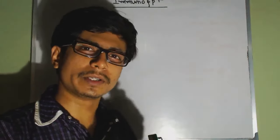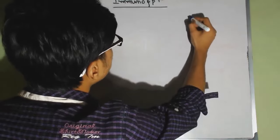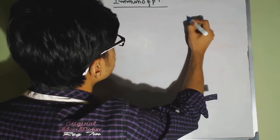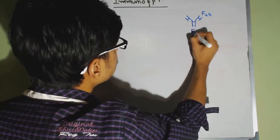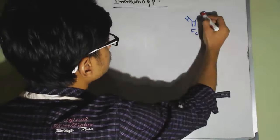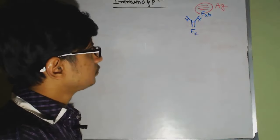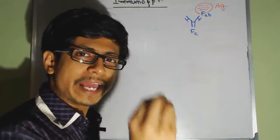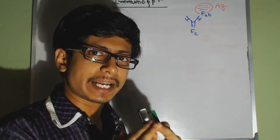Antigen binds with antibody and the antigen-antibody reaction is very specific. We have an antibody with a FAB region and an FC region. This antibody can interact with the antigen using the FAB region. So wherever we have antigen, if you add the antibody, that antibody can bind to that antigen with a specific interaction.